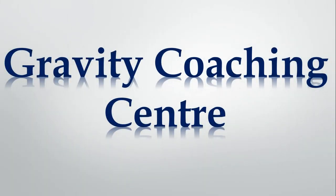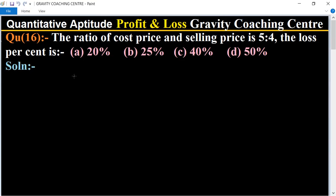Welcome to our channel Gravity Coaching Centre. Quantitative Aptitude, chapter Profit and Loss, question number 16. The ratio of cost price and selling price is 5:4.